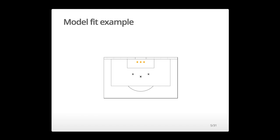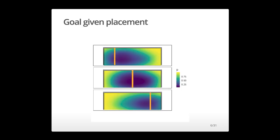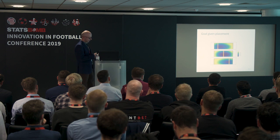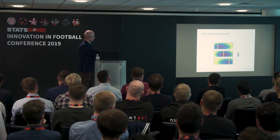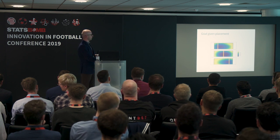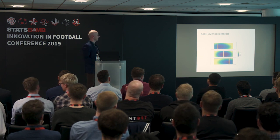To illustrate what my model fit looked like, I'll show what it says for shots from three different locations, with the goalkeeper at three different positions. Starting from the central one — this is the goal frame. For shots from the center, the orange line indicates the position of the goalkeeper. You generally get what you'd expect: for shots that end up in the goal frame, the chance of them being a goal is highest the further away they are from the keeper. There's a bit of asymmetry here when the goalkeeper is positioned centrally, which has implications further down the line.